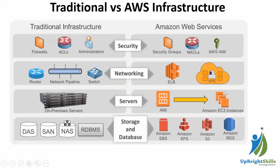In traditional infrastructure, we used to have our own data centers — we built our own servers, networking layers, and different layers to create our own data centers. For the security layer in traditional infrastructure, we had our own firewalls with our own set of rules, access control lists where we defined subnets and routings, and allow and deny rules.